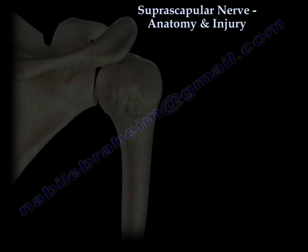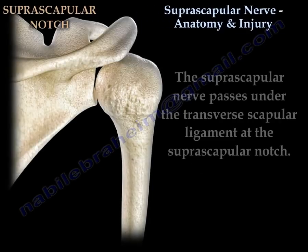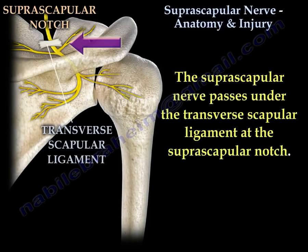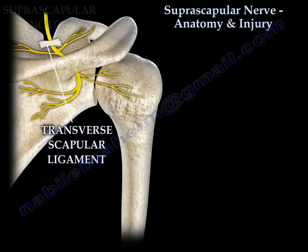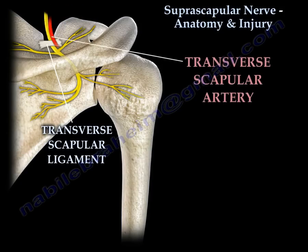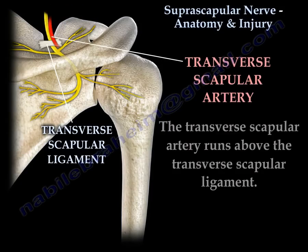The suprascapular nerve passes under the transverse scapular ligament at the suprascapular notch. The transverse scapular artery runs above the ligament.